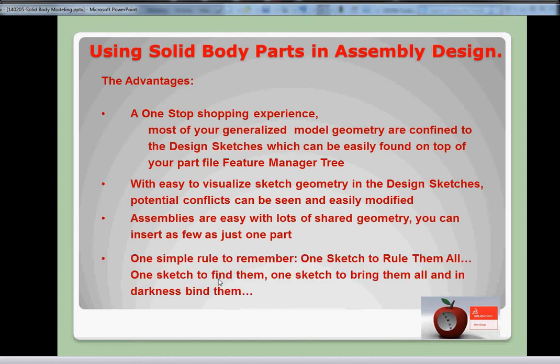If there's one thing to keep in mind when you're doing all this modeling, there's one simple rule: you have one sketch to rule them all, to borrow from the Lord of the Rings. One sketch to find them, one sketch to bring them all, and in darkness find them. Definitely the one sketch to rule them all is something you're going to develop when you put together your solid bodies. There's going to be one sketch, or maybe a number of different sketches, on top of your feature manager design tree which are going to influence all the features that come after that. And that's a real big advantage.